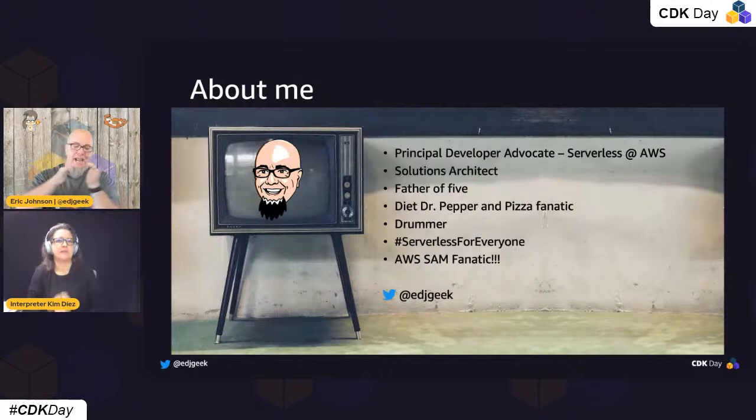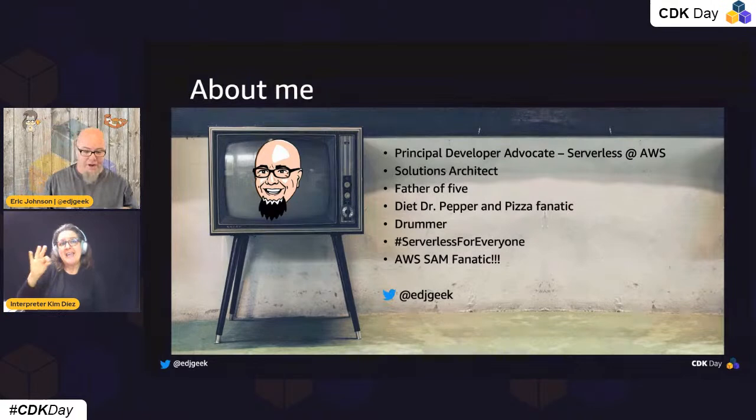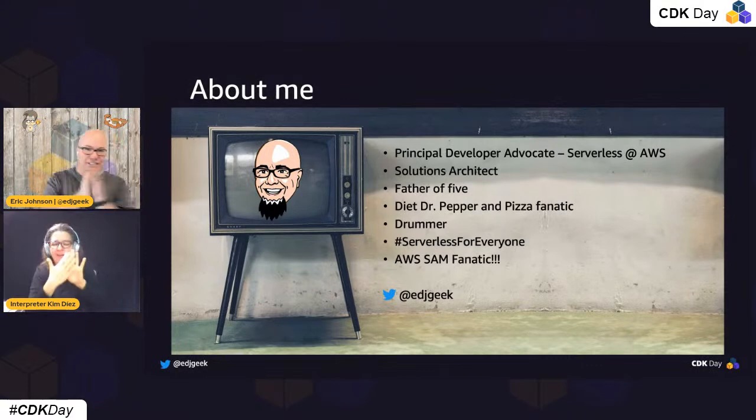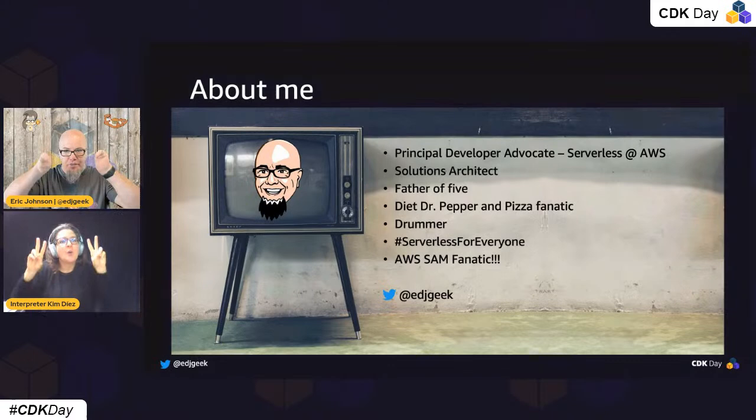Here are some guidelines: any number I hold up could be anything — five kids, a table for seven, 99 bottles of Diet Dr. Pepper on the wall, whatever. You've got to listen to what I'm saying and not what I'm holding up. These are thumbs. These are quotes, not apostrophes. That's just how I roll.